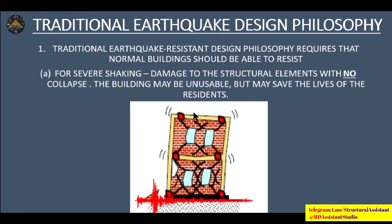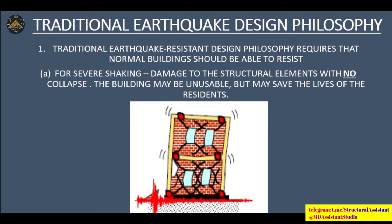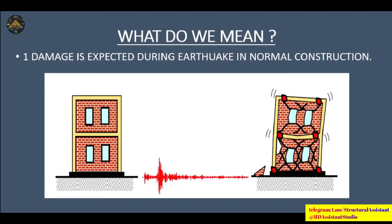For severe shaking, the building should not collapse. You can see the building has swayed with large cracks in the brick wall and hinge formation at beam-column junctions, but the building is still intact so that we may be able to save the lives of the residents. We always design for earthquake resistance, not earthquake proof. During a major earthquake, the building will experience damage, but it should save the life of the residents. The RCC frame remains intact.